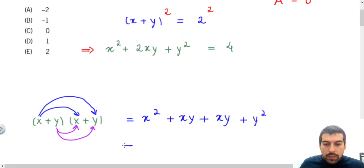So we will have x squared plus 2 times xy plus y squared. That's exactly what I put here.